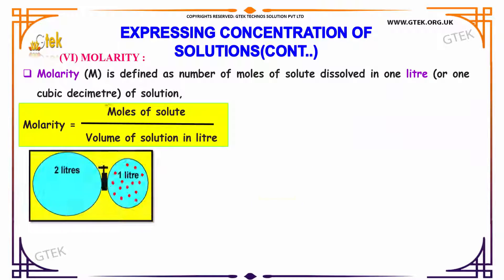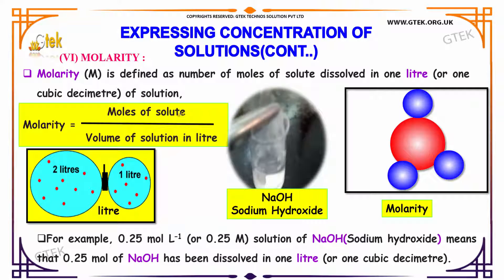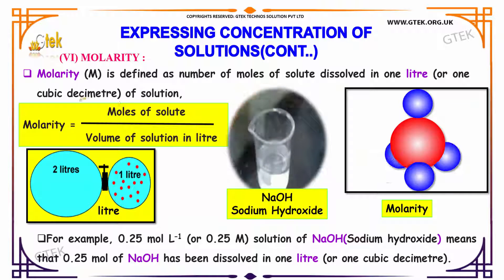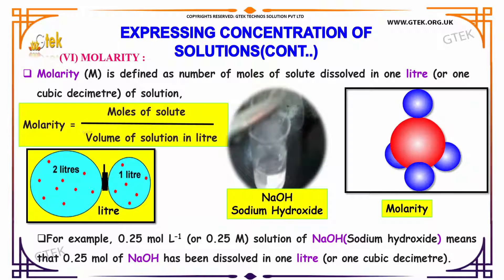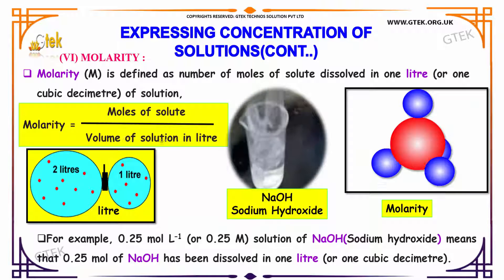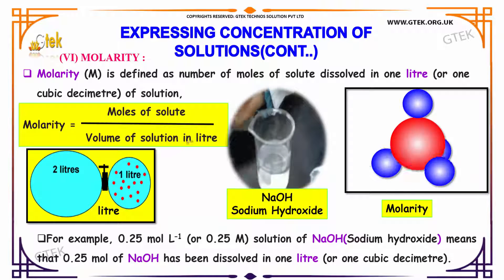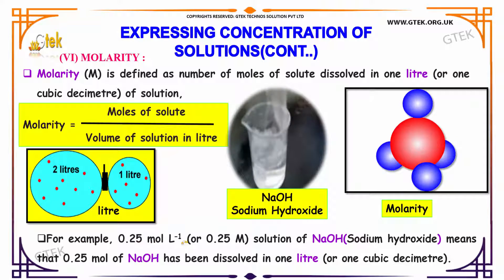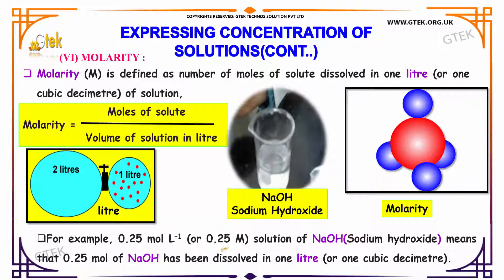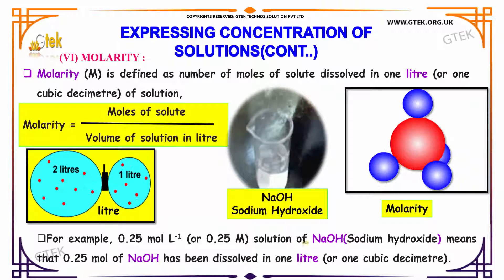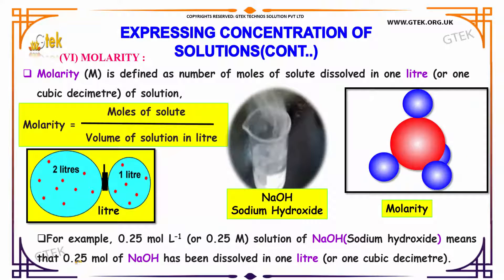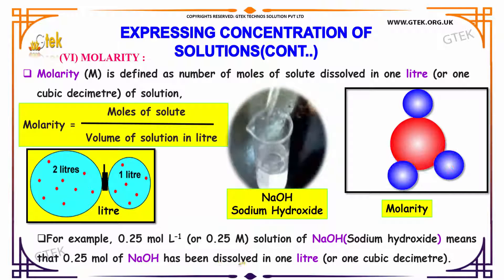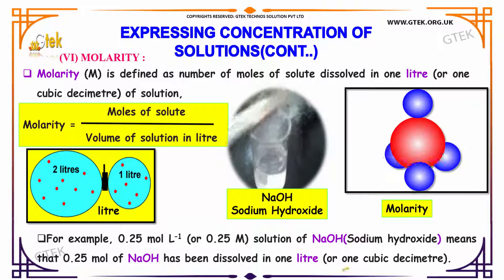Here is molarity, M. It is defined as the number of moles of solute dissolved in 1 liter or 1 cubic decimeter of solution. Molarity equals moles of solute divided by volume of solution in liters. For example, a 0.25 M solution of sodium hydroxide means that 0.25 moles of sodium hydroxide have been dissolved in 1 liter or 1 cubic decimeter.